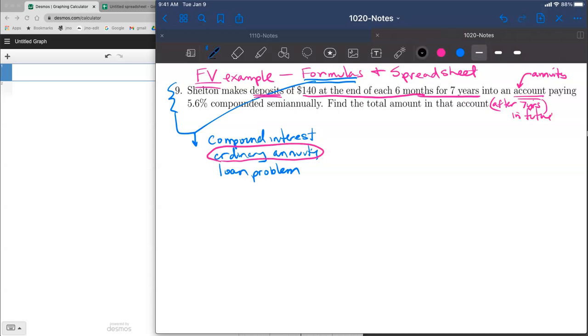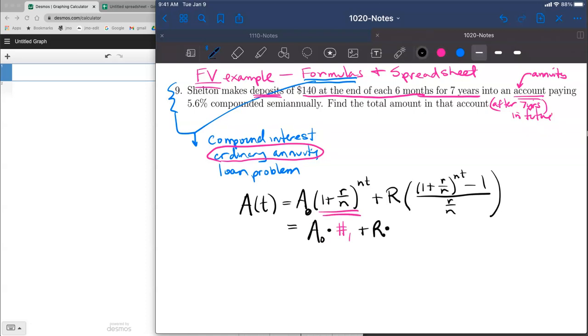Having identified the problem type, the ordinary annuity equation tells us that the amount in an account depends on the initial amount A₀ that accrues interest, plus regular deposits R multiplied by [(1 + r/n)^(nt) - 1] / (r/n). We can think of this as A₀ multiplied by number 1, plus R multiplied by number 2, where number 2 is that complicated expression. This gives the amount in an account at any time.